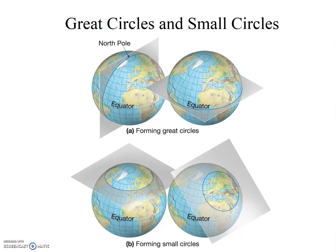You likely noticed that the equator completely circled the globe and essentially divided it in half. The equator is what is called a great circle. If any plane cut through the center of the Earth, thus splitting the Earth in half, the resulting circle on the surface is called a great circle. Another way of thinking about it is that a great circle is the largest circle that can be drawn on any given sphere. It represents the circumference of the sphere and effectively cuts the sphere in half.